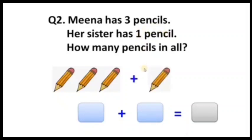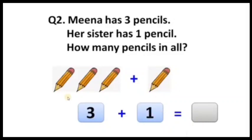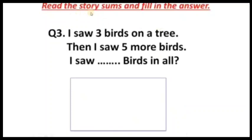One pencil. Now three plus one — the addition sentence is three plus one. Three pencils plus one pencil: total how many pencils are there? We have to count the total pencils. First, three pencils are there and one more pencil is adding — total pencils are three plus one equals four. One, two, three, four pencils. The addition sentence is three plus one equals four.